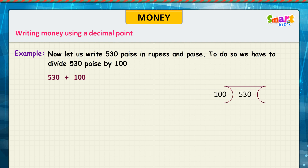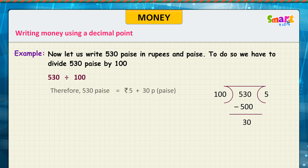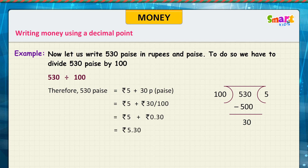Look at the problem. 530 divided by 100 gives 5, and the remainder is 30. Therefore, 530 paise is equal to 5 rupees plus 30 paise, which is equal to 5 rupees and 30 paise, written as 5.30 in decimal form.